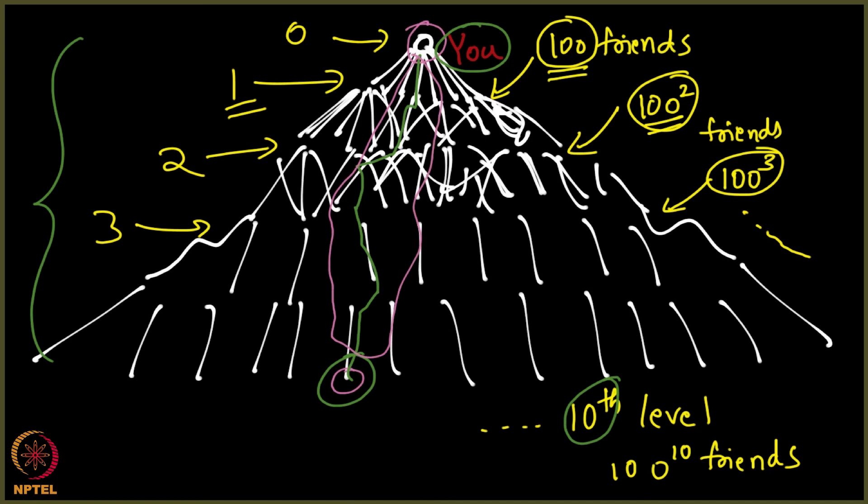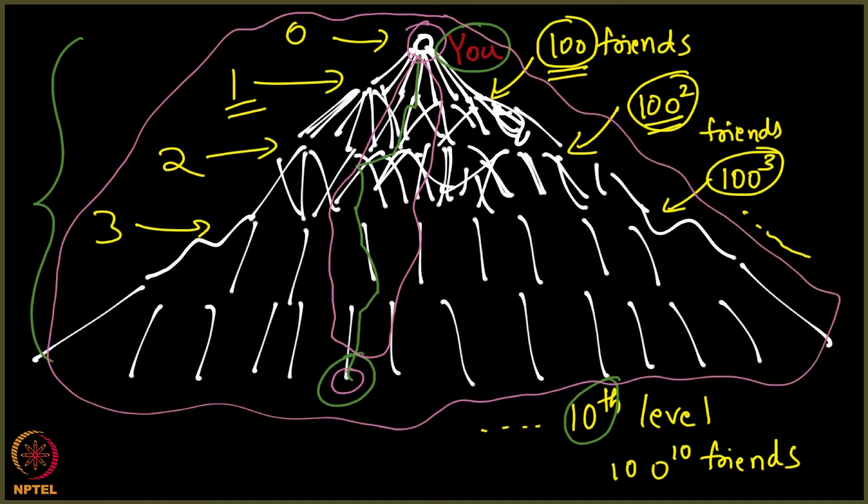It is not counter-intuitive. 10 is a small number as you can see. This hill sort of grows exponentially, it comes down exponentially. That is the reason why you will be exhausting the entire world's population. If you look at your friends, your friends' friends, your friends' friends' friends, and so on.